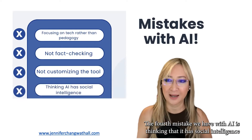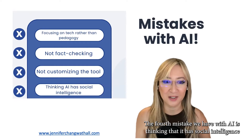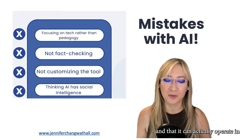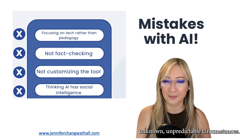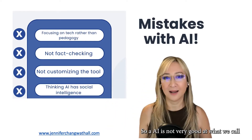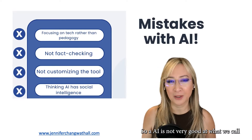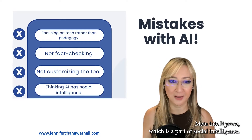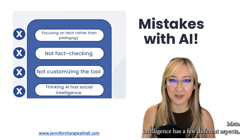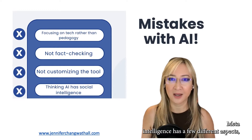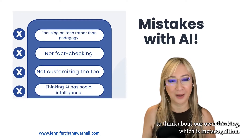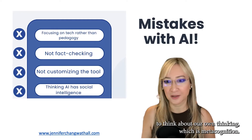The fourth mistake is thinking that AI has social intelligence and can operate in unknown, unpredictable circumstances. AI is not very good at what we call meta intelligence, which is a part of social intelligence. Meta intelligence has a few different aspects — one is metacognition, which is our ability to think about our own thinking.